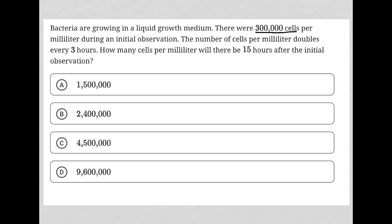Three hours later we should be at 600,000. So 300,000 at time zero, 600,000 at time three hours, and 1.2 million at time six hours — just making sure my mind understands what's happening here. The question goes on to ask: how many cells per milliliter will there be 15 hours after the initial observation?